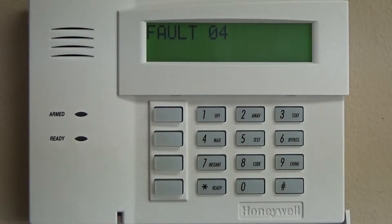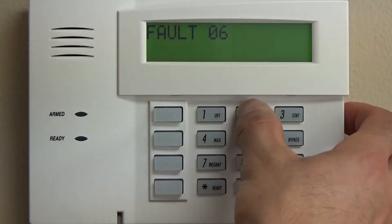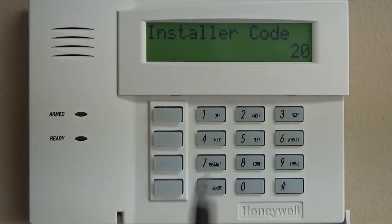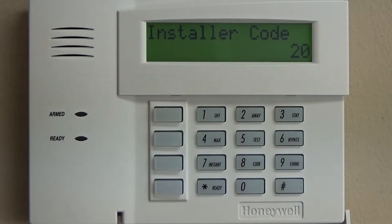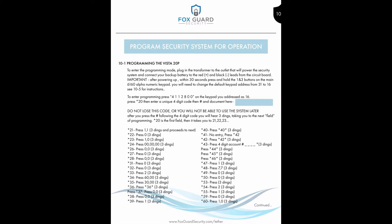So the default installer code is 4112800. Once you do that it's going to hop you into your programming menu, and this is a large list of star 20 down to star 199. There are different fields that you're going to enter, change data, and then proceed to the next one. Some of them are going to be relevant for your install, some of them are not. But what we're going to do is go through all of them and give you a step by step how to program this thing top to bottom.